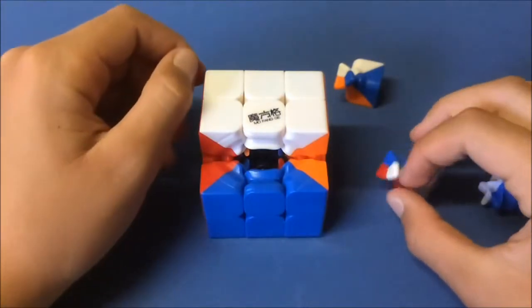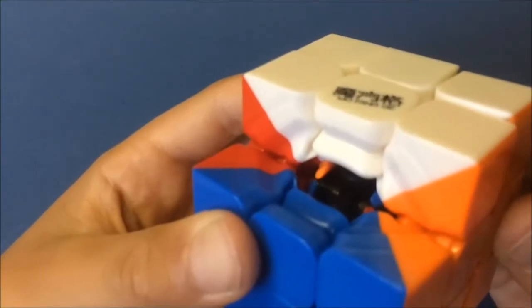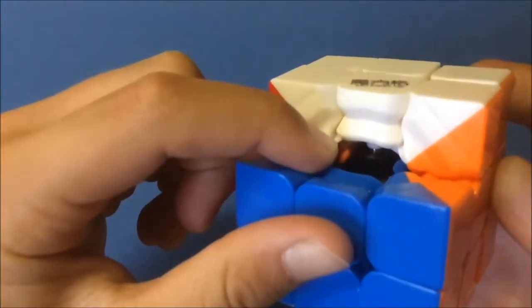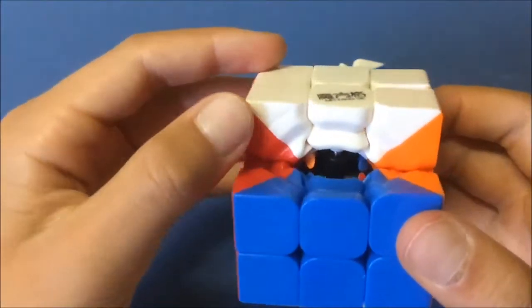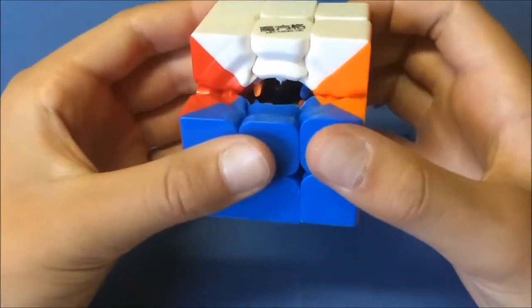This cube does come pre-lubricated from the factory or wherever you get it. The inside mechanism is that. You can see all the little plastic pieces like that orange one right there and that blue one there. I'm not sure why those are in there but that's okay because it doesn't really bother me all that much.